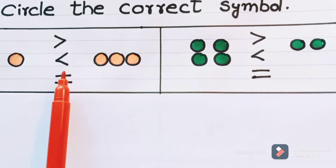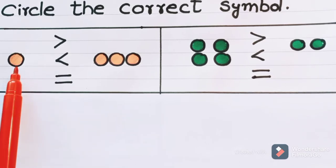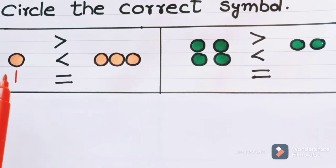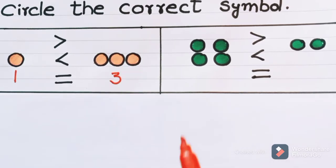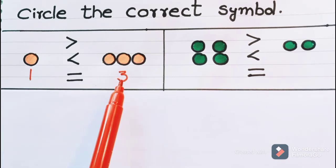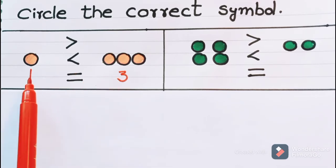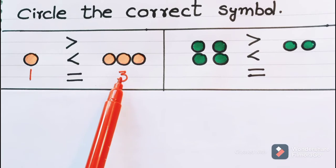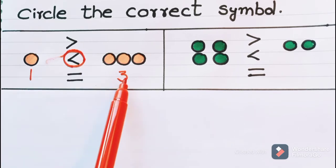Children, shall we start counting the objects? Let us start. What is this object? It is a circle. How many circles are here? Only one. Then how many circles are here? One, two, three — there are three circles. When you compare the number one with the number three, is it smaller or greater? One is smaller than the number three. So for smaller numbers, we use less than symbol. One is less than three.